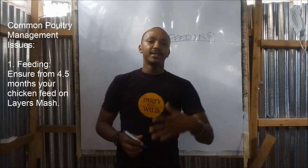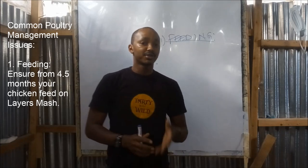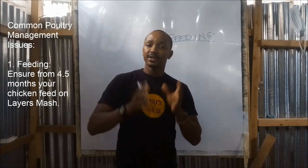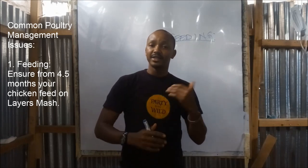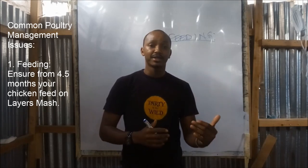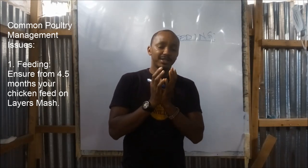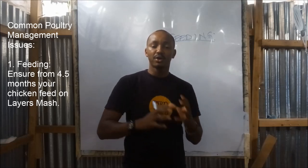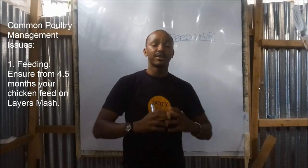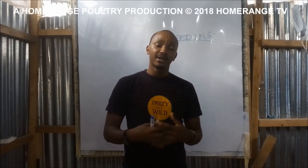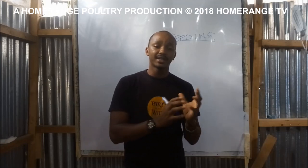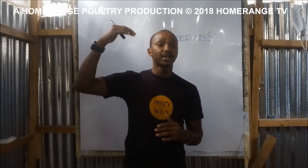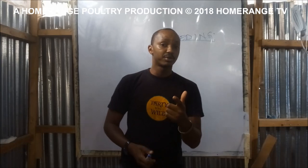At the age when the chicken is actually starting production, which is from around four and a half months, one critical thing is that your chicken should by now have started eating layers mash. Layers mash is feed that is specifically formulated with the correct nutritional balance to make sure that your chicken actually starts giving you eggs. Feeds such as layers mash usually contain a lot of minerals, which is what the chicken requires to be able to give you eggs.